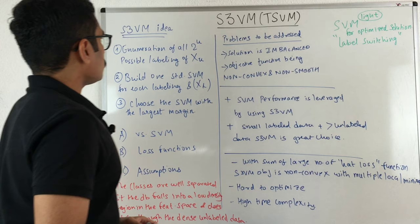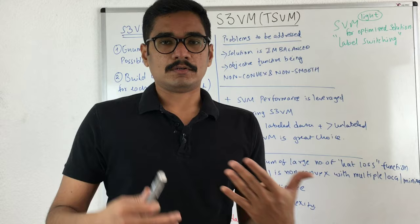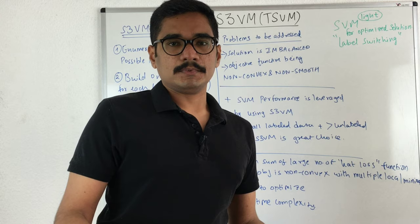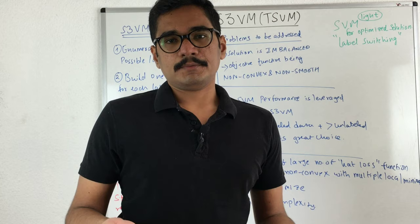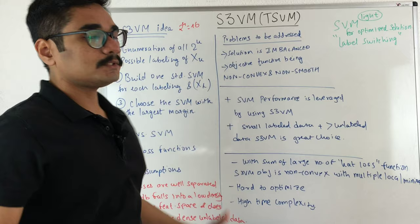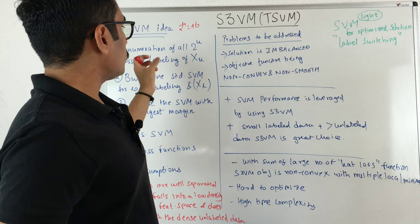What are the basic steps or how do you perform the S3VM? Here is a general idea in three steps. First, we have the unlabeled instances, so we take the enumeration — also known as the power set or label power set technique. If you have four instances, you do 2 raised to 4, giving 16 all possible combinations. So first you enumerate all possible labelings — that is 2 raised to |U|, where U stands for the unlabeled instances — and try to get the labeling of each X_U.